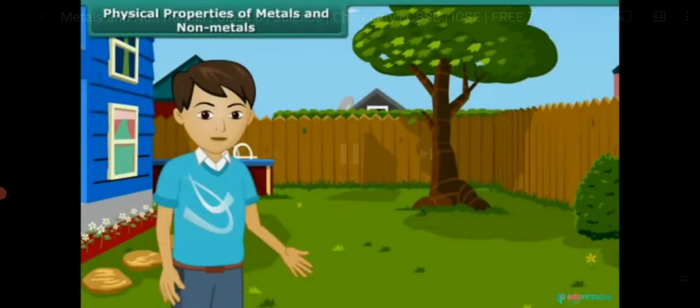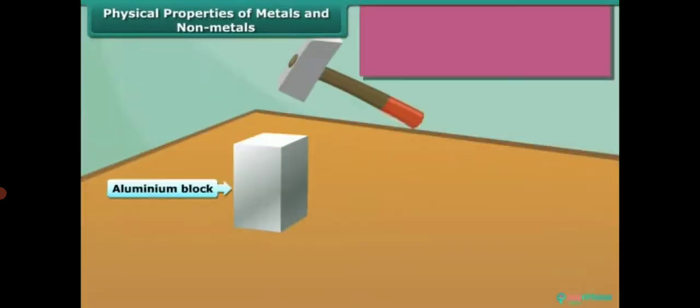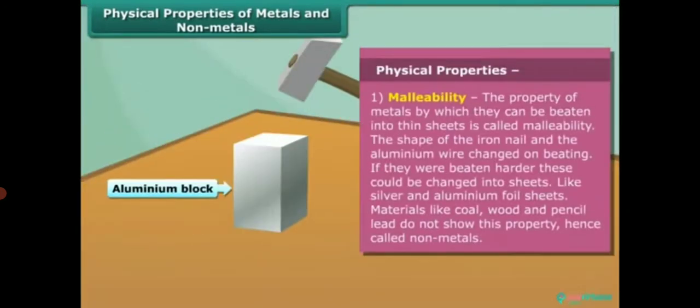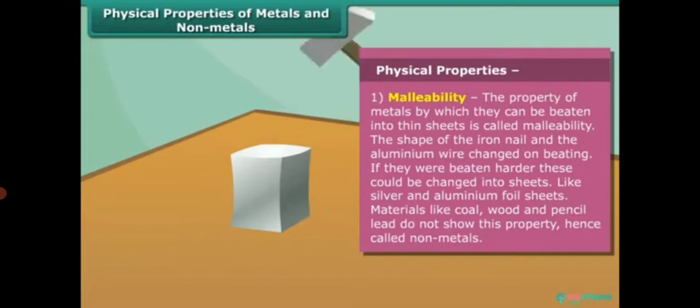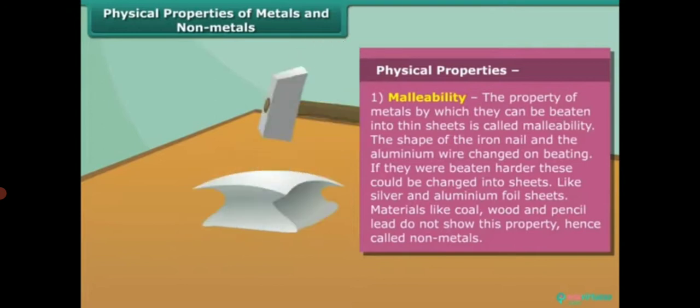So students, now let's know about their properties. First we know about the physical properties. The first property of metal is its malleability. By this property, the metals can be beaten into thin sheets. Non-metals does not show this property.